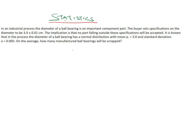In this video we are going to solve a question under a normal probability distribution. The question states that in an industrial process, the diameter of a ball bearing is an important component part. The buyer sets specification on the diameter to be 3 plus or minus 0.01 centimeters. No part falling outside this specification will be accepted. It is known that in the process the diameter of a ball bearing has a normal distribution with mean of 3 and standard deviation of 0.005. On the average, how many manufactured ball bearings will be scrapped?